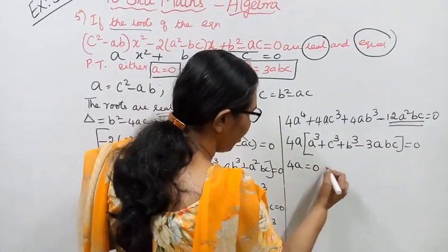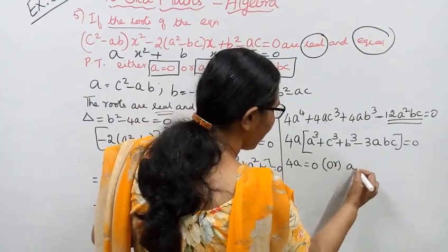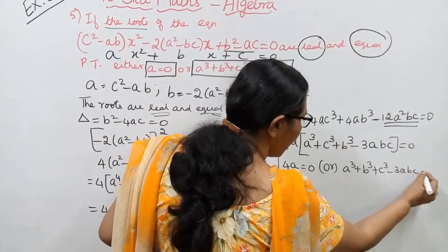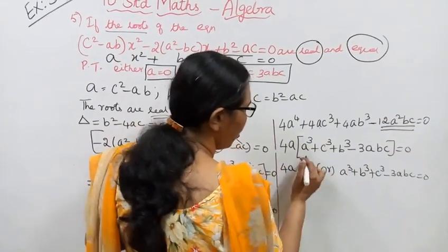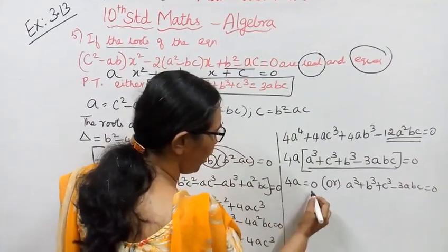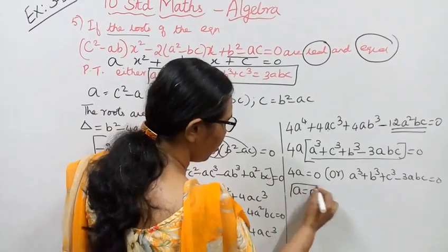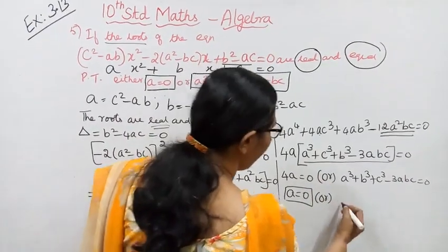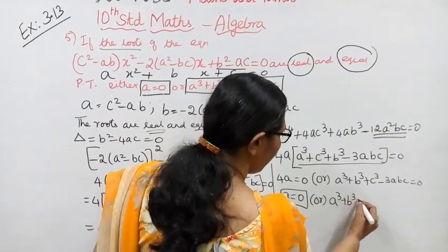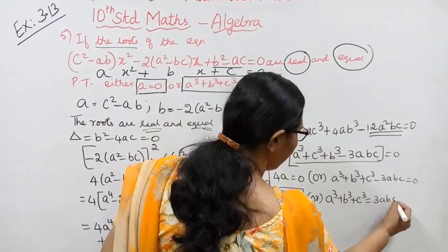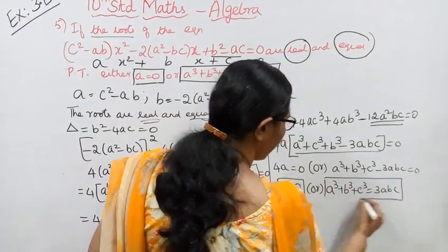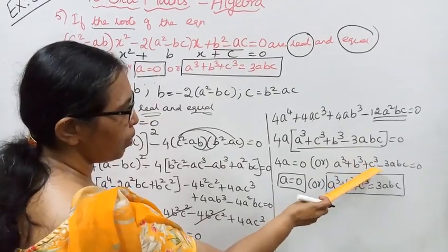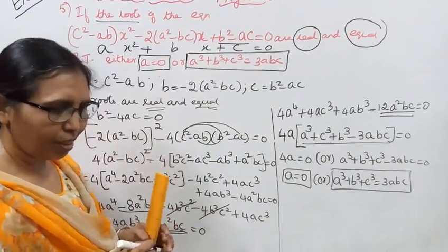Therefore: either 4a = 0, which gives a = 0, or a³ + b³ + c³ - 3abc = 0, which means a³ + b³ + c³ = 3abc. Hence proved.